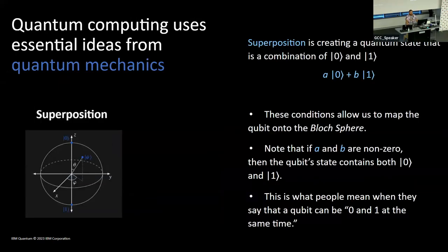These computers use essential ideas from quantum mechanics, one of them being superposition. Superposition creates a quantum state where you have a combination of both zero and one. These conditions allow us to map this onto a Bloch sphere. If A and B are non-zero, then the qubit state contains both zero and one simultaneously — this is what people mean when they say a qubit can be zero and one at the same time.